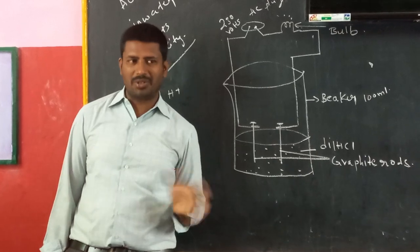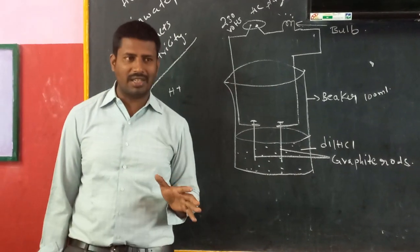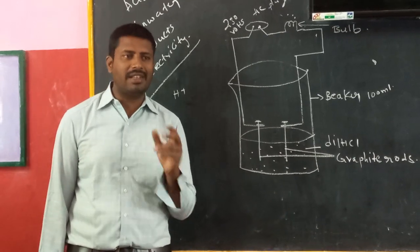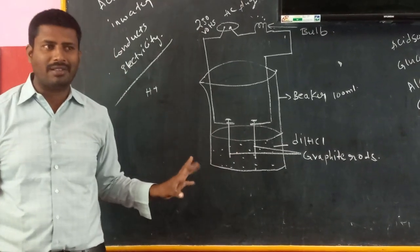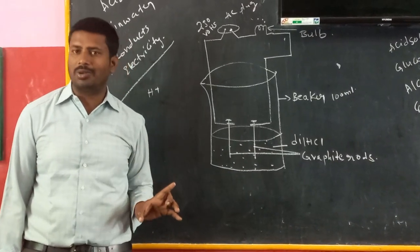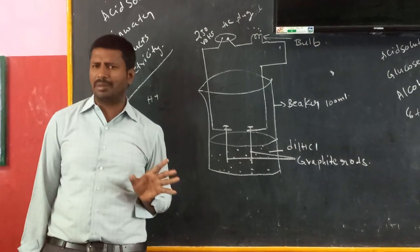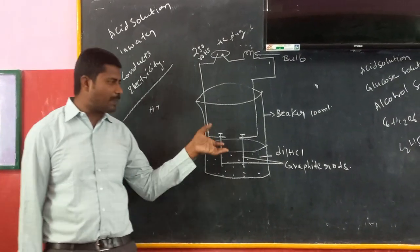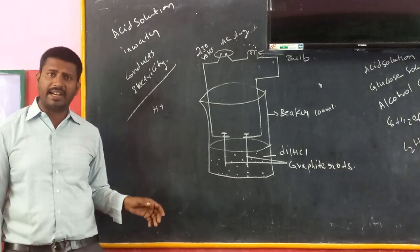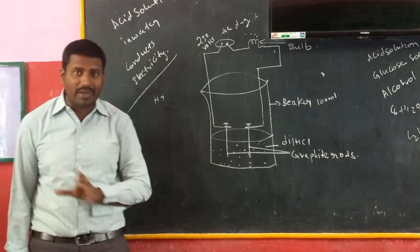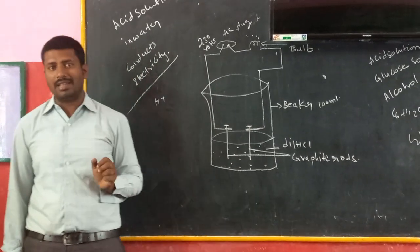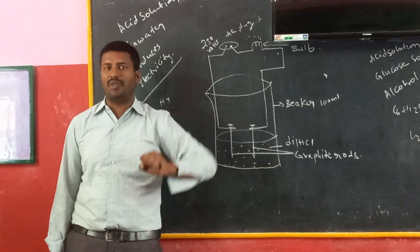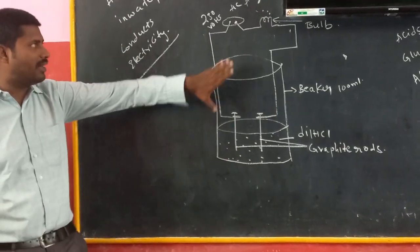If electricity did not flow, then the bulb will not glow. Initially we have taken dilute hydrochloric acid solution. When we take acidic solution, the bulb is glowing because the hydrochloric acid solution produces H+ ions, which are cations. These H+ ions are responsible for the flow of electric current. When electric current flows, the bulb glows. In every acidic solution, H+ ions are produced, which have the ability to conduct electricity and continue the flow of electric current. That is the reason why in this case the bulb glows.